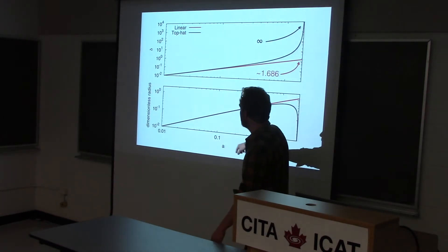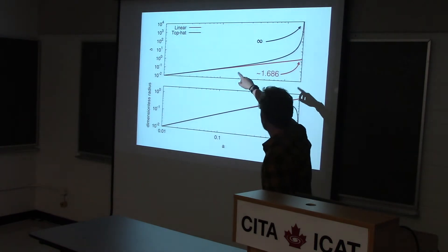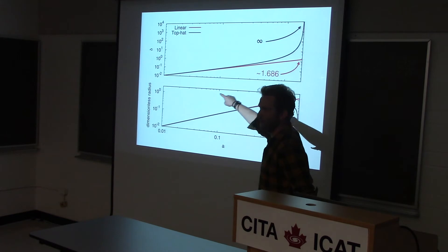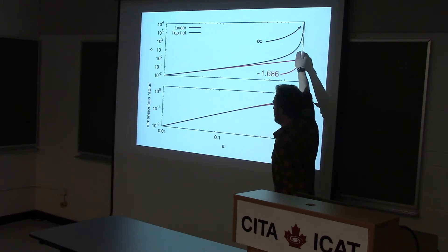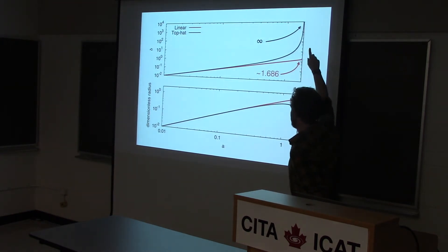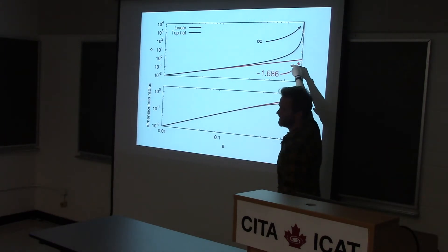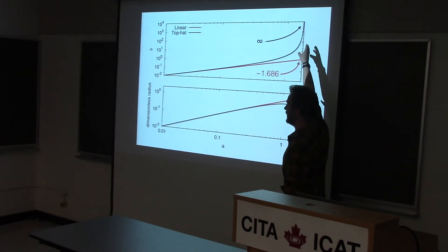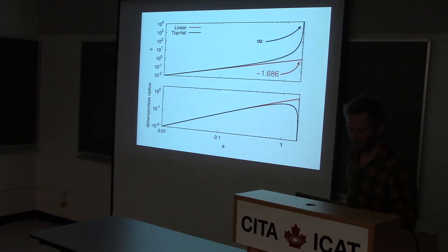Here's A (scale factor) along the bottom. In the top panel is delta on the y-axis; the bottom panel shows the radius of the perturbation. The linear and the top-hat solutions initially grow in tandem, then start to depart, and finally the full non-linear solution collapses to infinite density as the radius drops to zero. One famous result in non-linear structure formation is that the value the linear density field takes when the non-linear density field reaches infinity is 1.686. That number is independent of the mass of the perturbation and independent of the initial radius — it's a well-known number.